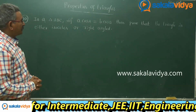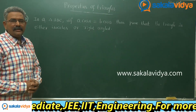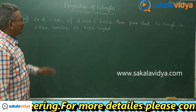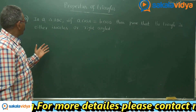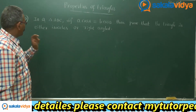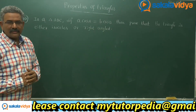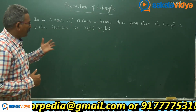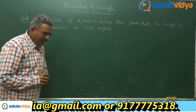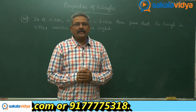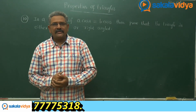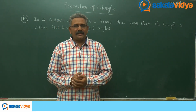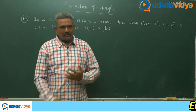Here two cases are to be considered. In case 1, we shall prove isosceles. In case 2, we prove right-angle triangle. In order to prove right-angle triangle, it is enough to prove that one of the angles is 90 degrees, or the sum of the other two angles is 90 degrees. Now let us solve this problem.